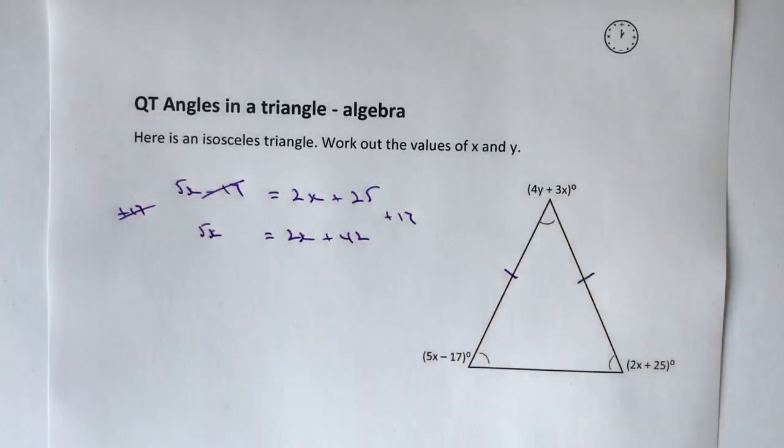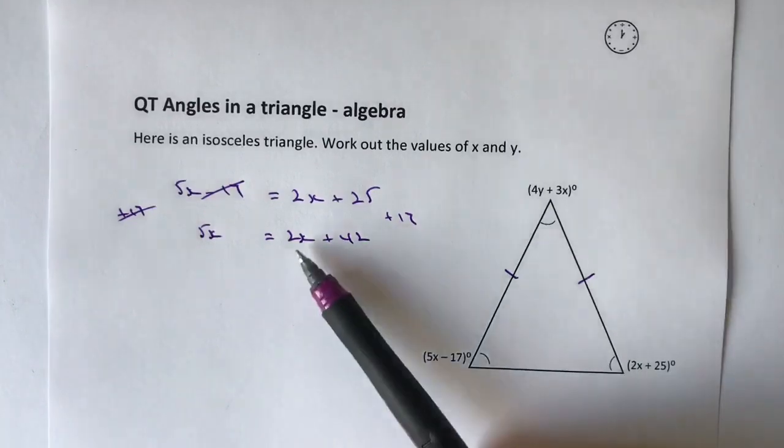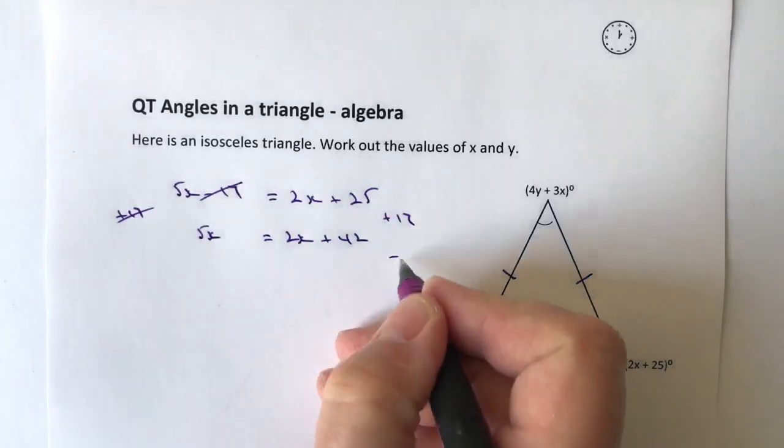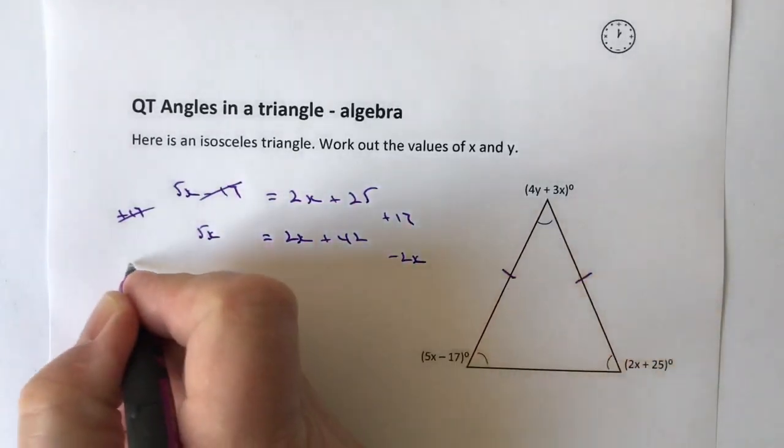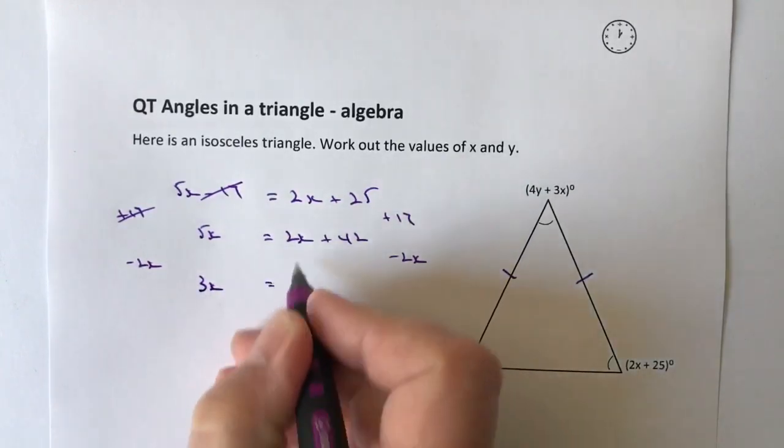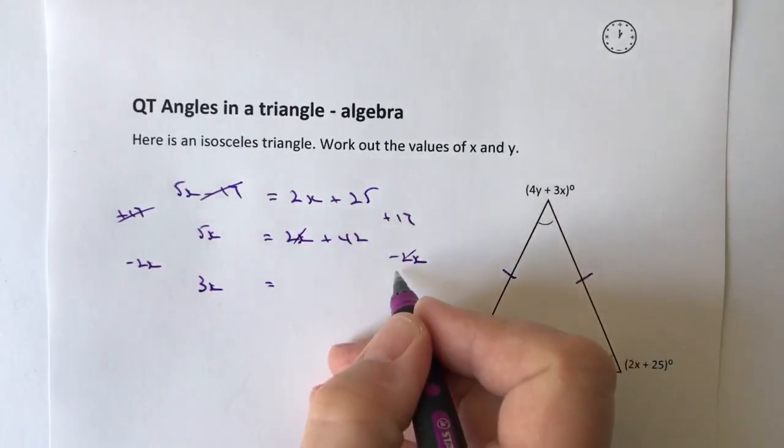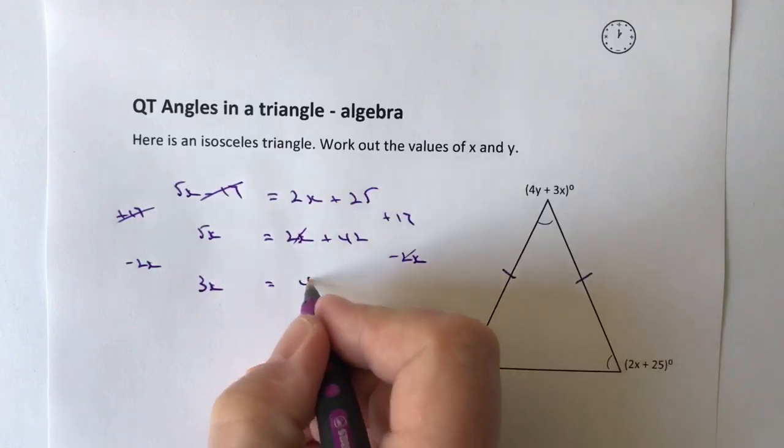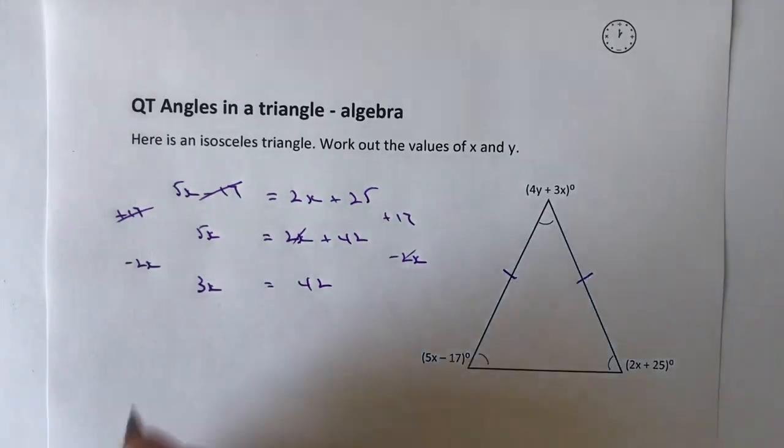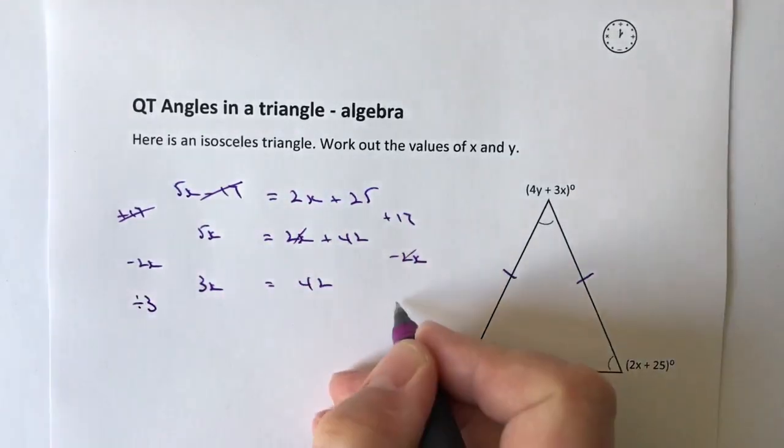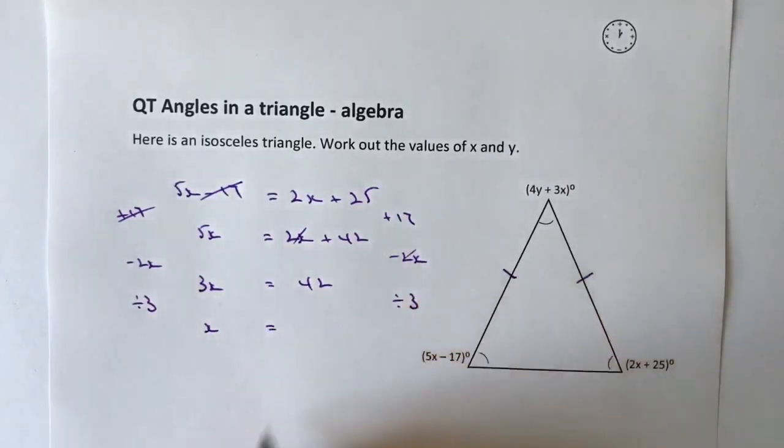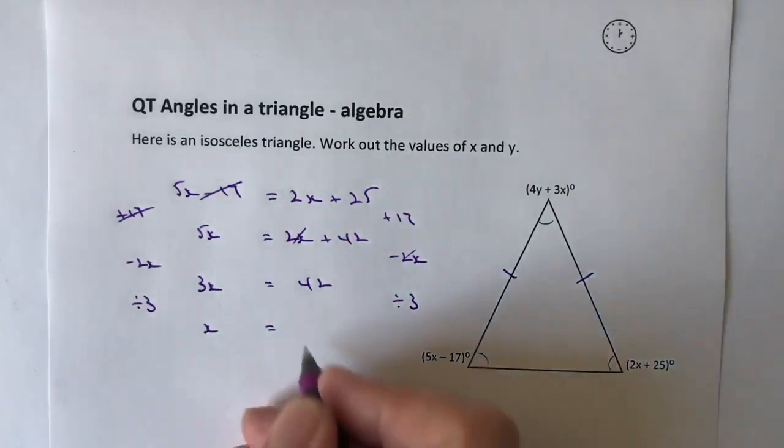Next, I'm going to take this 2x and move it over towards the left hand side by subtracting 2x from both sides. If I do that, I end up with 3x equals 42. Then I divide through by 3, so 3 divided by 3 is 1x and 42 divided by 3 is 14.